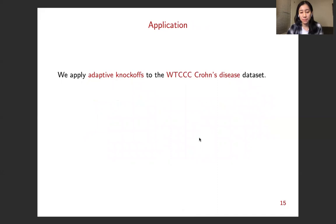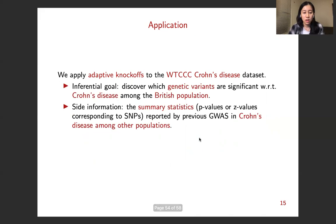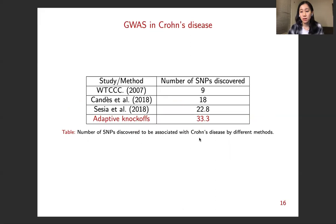And then we also apply our procedure to a real data, the WTCCC Crohn's disease dataset. We wanted to discover which genetic variants are significant with regard to Crohn's disease among the British population. The side information we use is the summary statistics reported by previous GWAS in Crohn's disease among other populations. So the summary statistics are p-values or z-values from GWAS in East Asia, Iran, Belgium, Germany, and the US.